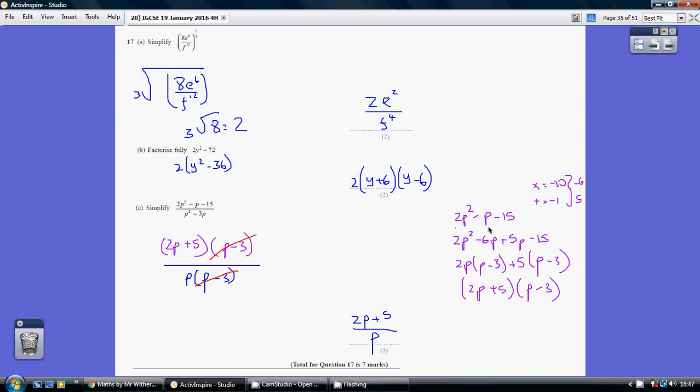We start off by thinking of the two magic numbers which multiply to make the 2 times the minus 15, which is minus 30, yet add to be the coefficient of the p, which is minus 1. What two numbers is this? Minus 6 and 5. We then split our middle term down into a minus 6 and a 5.